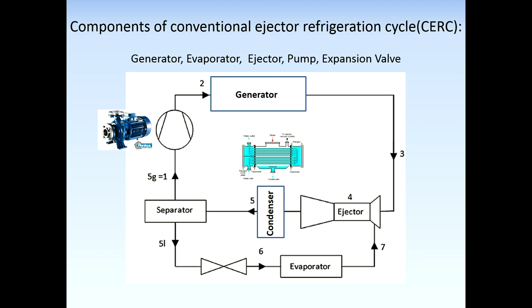Regarding the generator, as mentioned, using dissipative energies, solar energy, or geothermal energy we can prepare the heat for the generator. In a refrigeration cycle with a solar energy generator, solar collectors are used in a closed secondary cycle to warm up the operating fluid, which then exchanges its heat via a heat exchanger with the refrigerant working through the cycle.